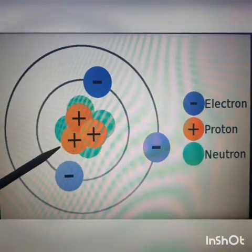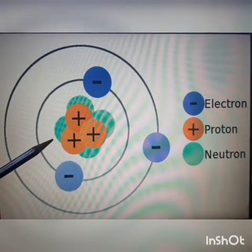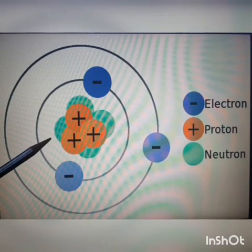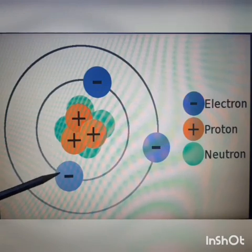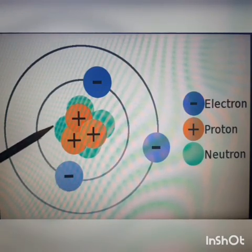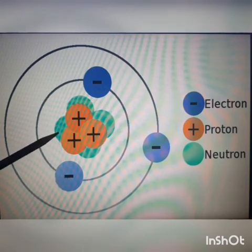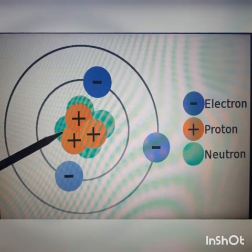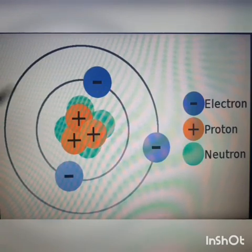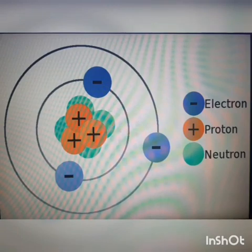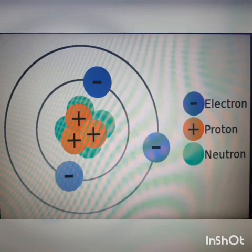Protons are marked plus because they have positive charges. These are electrons which move around the orbit and they contain negative charges. And these green ones are the neutrons. They are neutral, that means they do not contain any charges.